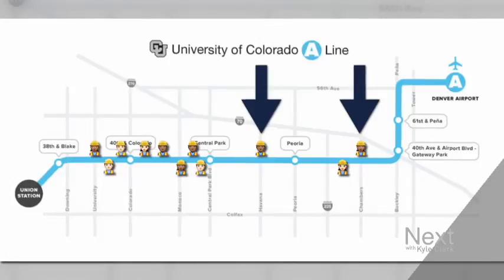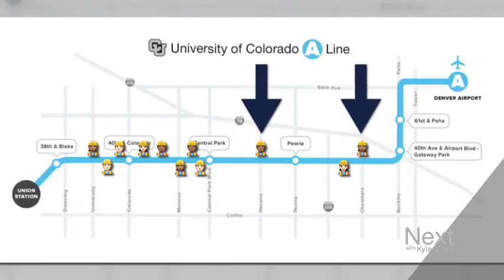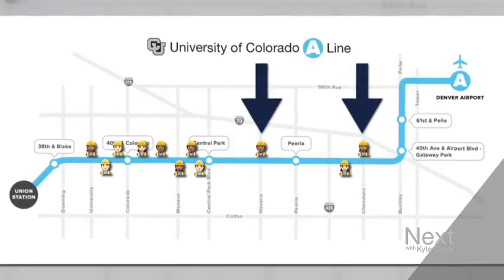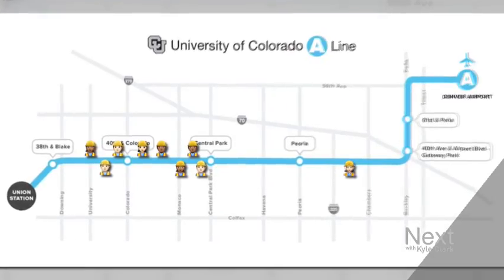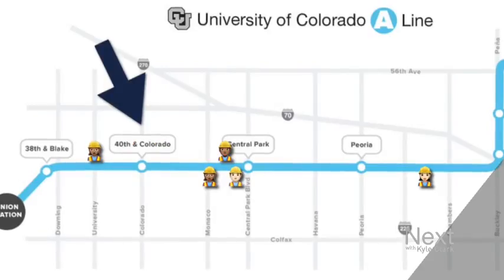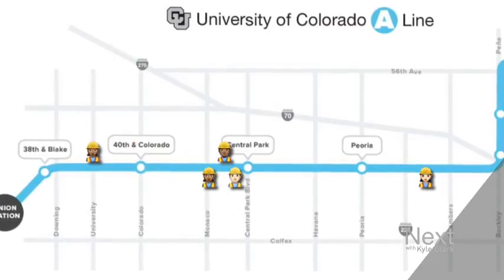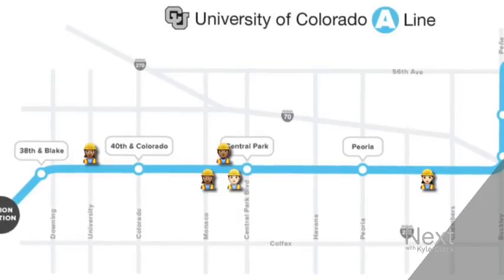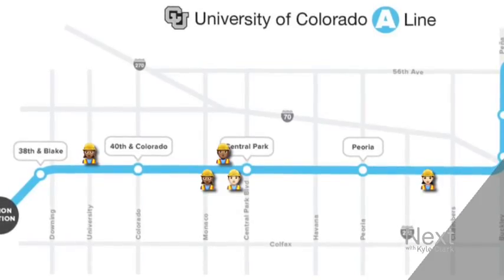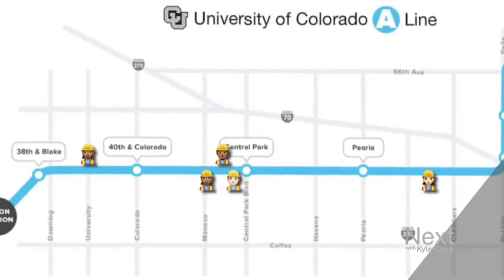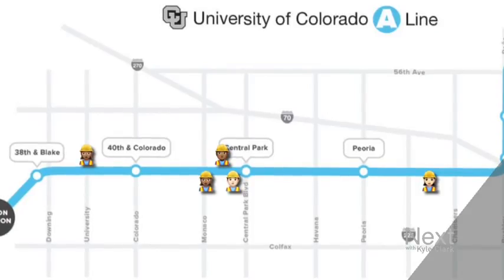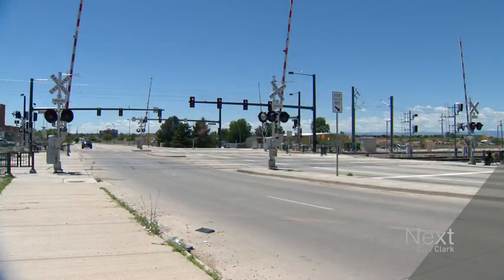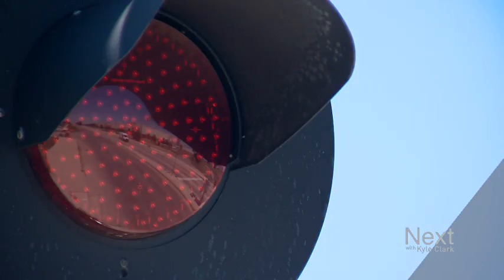The human training wheels are coming off the A line. More flaggers left their posts along crossings at six o'clock tonight. Chambers and Havana are now clear of those familiar friendly faces. The issue with the crossing guard arms is finally fixed to the satisfaction of regulators — and it only took two years after the train to the plane opened. Now the flaggers move west to stand guard on the long-delayed G line out to Wheat Ridge and Arvada as that goes through its testing process.